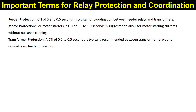For feeder protection, a CTI of 0.2 to 0.5 seconds is typical for coordination between feeder relays and transformers. For motor protection, a CTI of 0.5 to 1 second is suggested to allow for motor starting current without unwanted tripping. For transformer protection, a CTI of 0.2 to 0.5 seconds is typically recommended between transformer relays and downstream feeder protection.